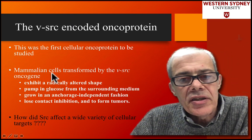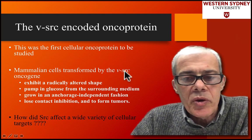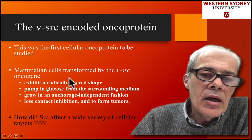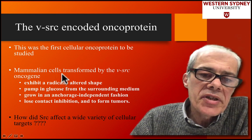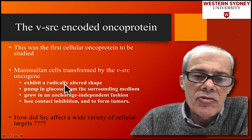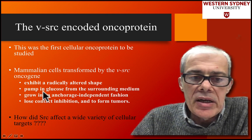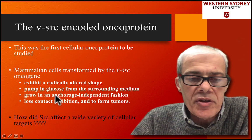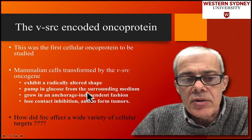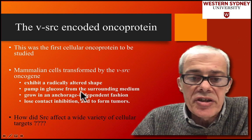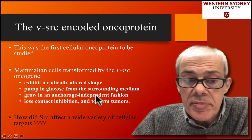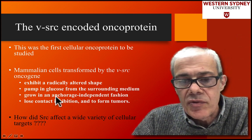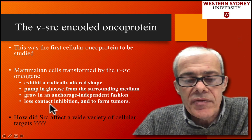Mutations in the Src protein — it was one of these viral oncoproteins identified early on in the story. When you transform cells with a mutated Src, it leads to radically altered cell shape, changes in glucose uptake from the surrounding media, cells lose their anchorage dependence and become anchorage independent, and they lose their contact inhibition and gain the ability to form tumors. So Src was affecting a lot of things.